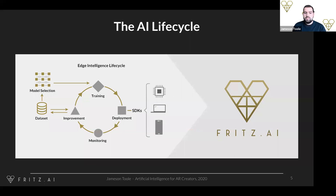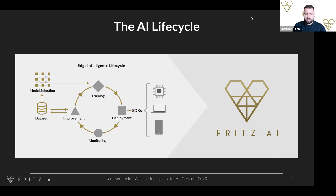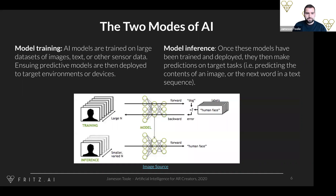The lifecycle involves seeing how the model works, finding cases where it doesn't work as well as you'd like, collecting more data, and repeating the whole cycle again. This is not something you can do once, get a model, and forget about. It's really a continuous, iterative process — you have to be willing to go through this loop a few times before you'll get something that works. We've tried to make that as easy as possible with Fritz AI, and I'll show you examples of that toward the end of the webinar.